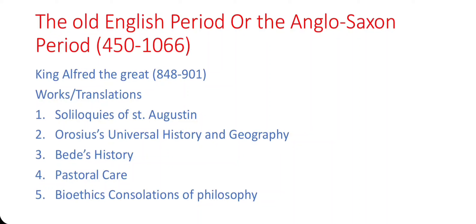Next is King Alfred the Great, 848 to 901. Works and translations include Soliloquies of Saint Augustine, Orosius' Universal History and Geography, Bede's History, Pastoral Care, and Boethius' Consolation of Philosophy.